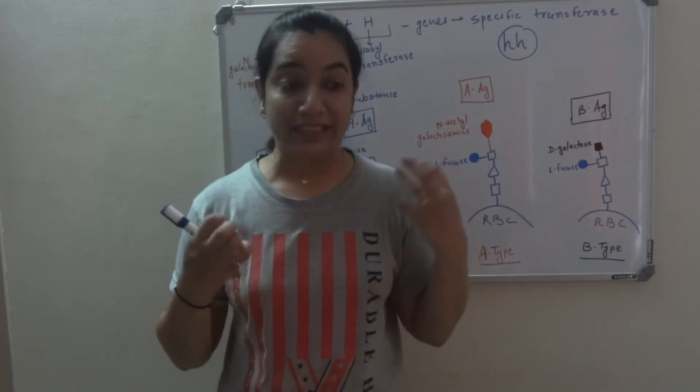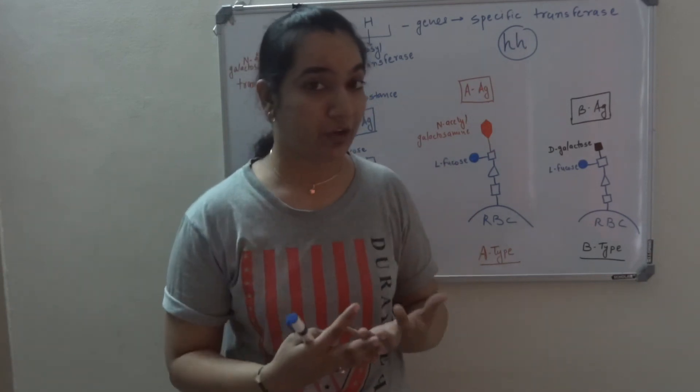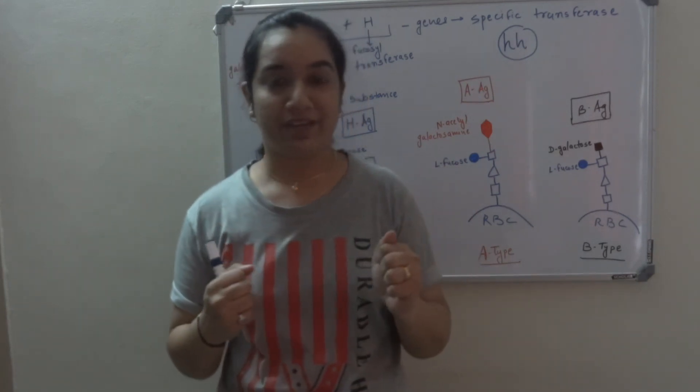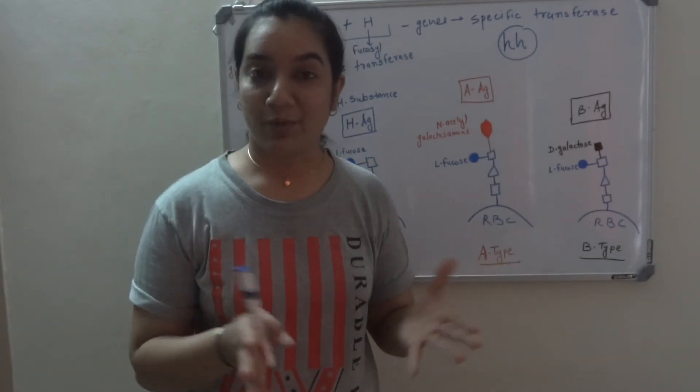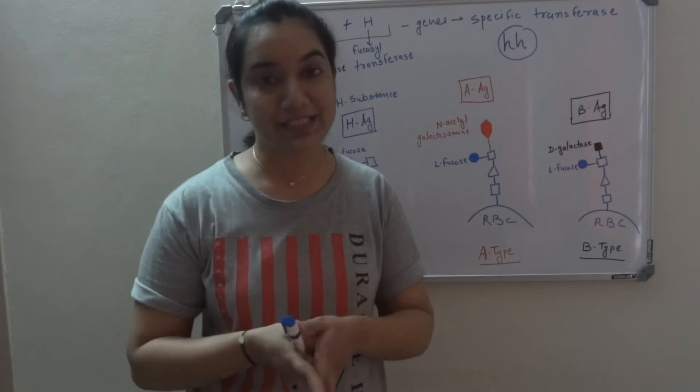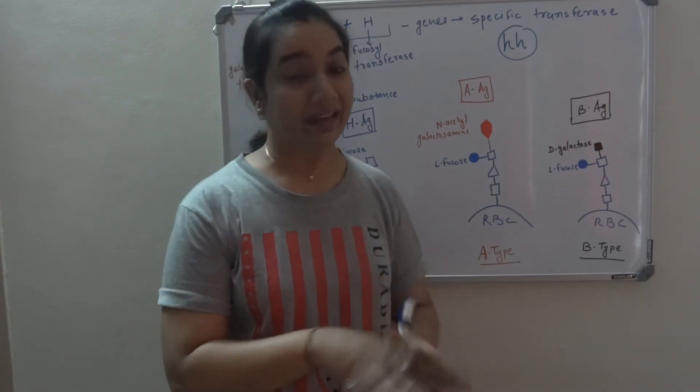Even though these individuals might have functional A or B gene, because they don't have H substance, it is not expressed on the surface. And why it is called Bombay blood group? Because it was first discovered in Bombay in India.